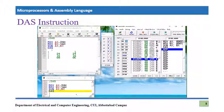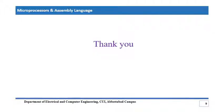Only one thing remaining is AAS — ASCII adjustment after subtraction — which I hope you can practice yourself. If you have any problems, you can ask in the online session. That's it from this lecture. If you have any queries, please note them down and we will resolve them in the online session. Thank you for listening.